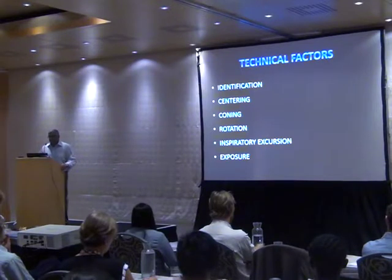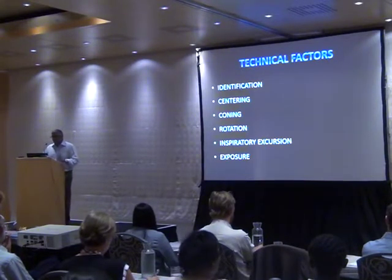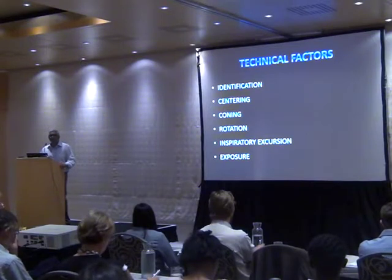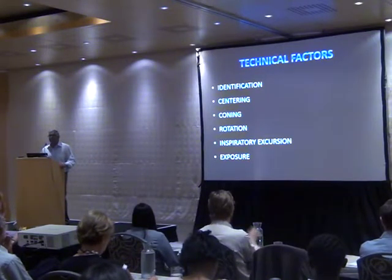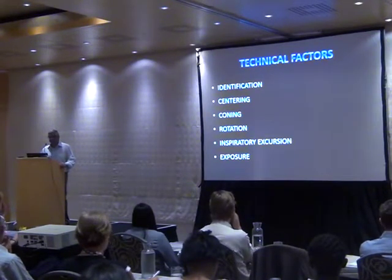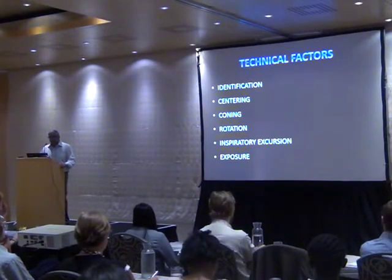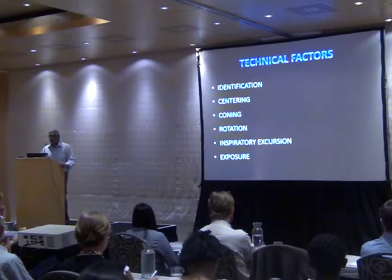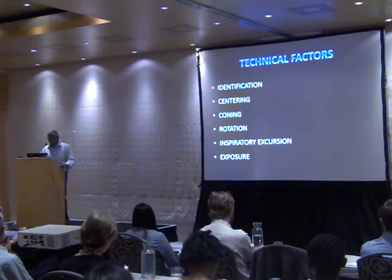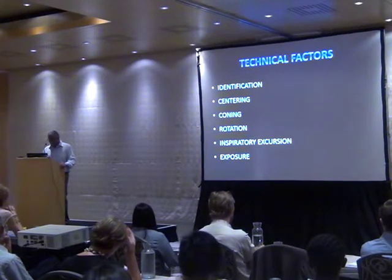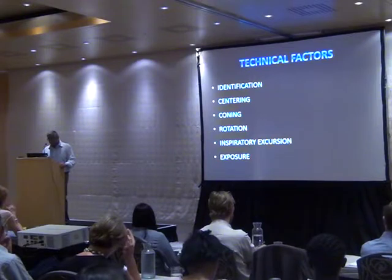The technical factors we're going to discuss include: identification — making sure we have the correct patient and are interpreting the correct chest radiograph — as well as centering of the patient, coning, rotation, what constitutes an adequate inspiratory effort, and exposure factors.